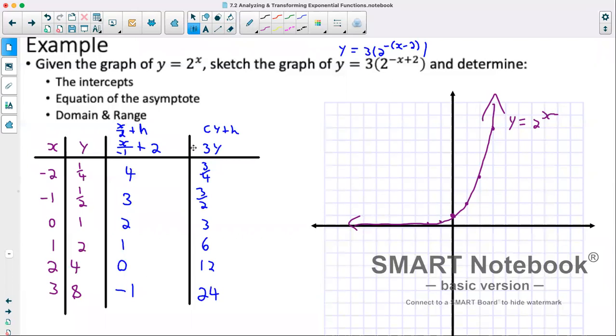So we'll plot these now. So at 4, we are at 3 quarters. 3, we're at 3 over 2, which is 1.5. At 2, we're at 3. 1, we're at 6. And 0, we're at 12, so off our graph. So our new graph would look something like this.